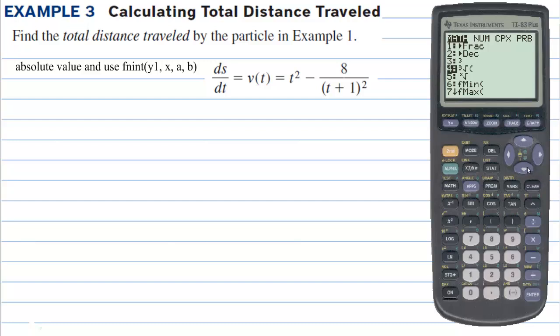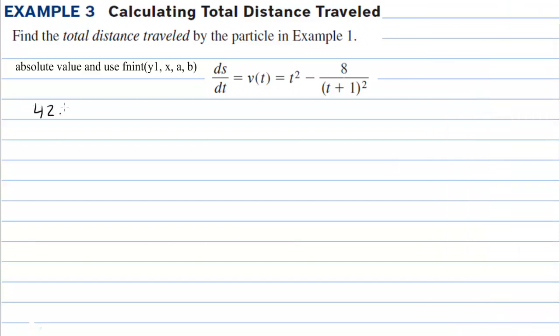So we're going to integrate because we're going to find total distance traveled. We want to go back into math and do the absolute value of y1. So now go into variables y, y1 right there. We have the absolute value of y1, it's still in x, and we are going from 0 to 5 seconds. So the total distance traveled is 42.587 centimeters.